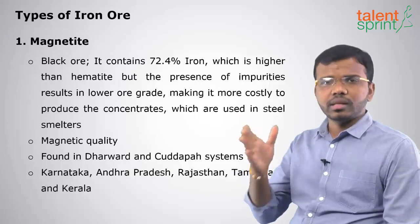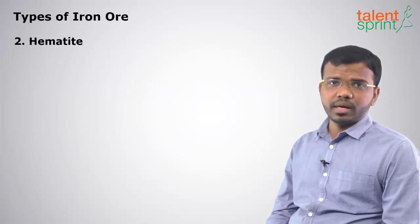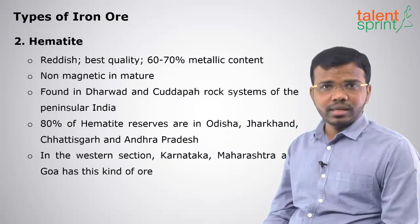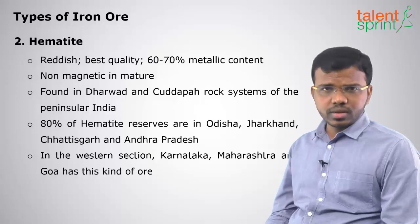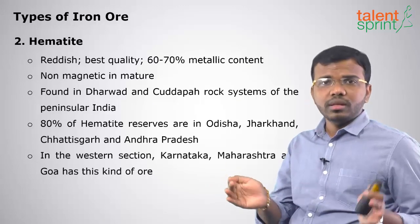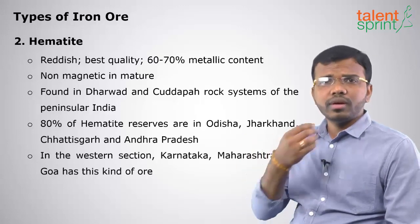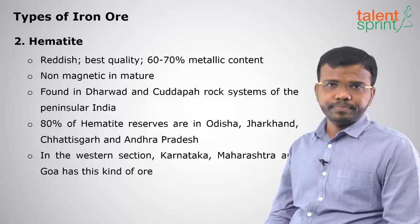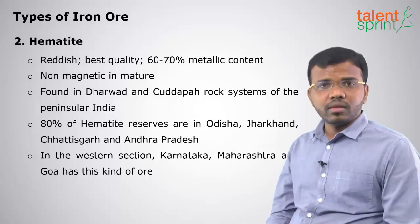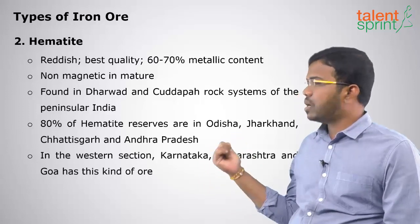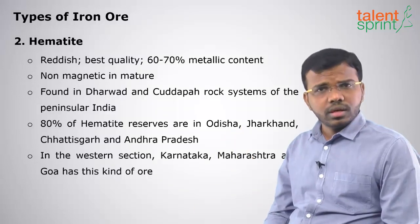The second type of iron ore is hematite. It is reddish in color and has 60 to 70 percent iron, which is less than magnetite. However, it is considered the best quality economically because the hematite ore has less impurity — there is a lot of hematite in the ore compared to magnetite ore. It has lesser magnetic properties. About 80 percent of hematite reserves are in Odisha, Jharkhand, Chhattisgarh, and Andhra Pradesh. In the western section, Karnataka, Maharashtra, and Goa also have hematite ore.